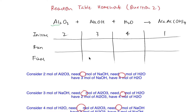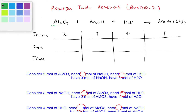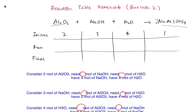Let's have a look at this homework for the reaction table, question 2. For any unbalanced reactions, the first thing you need to do is balance the reactions. You can see we have two moles of aluminium here and then there's one mole of aluminium, so we need to put a two here.